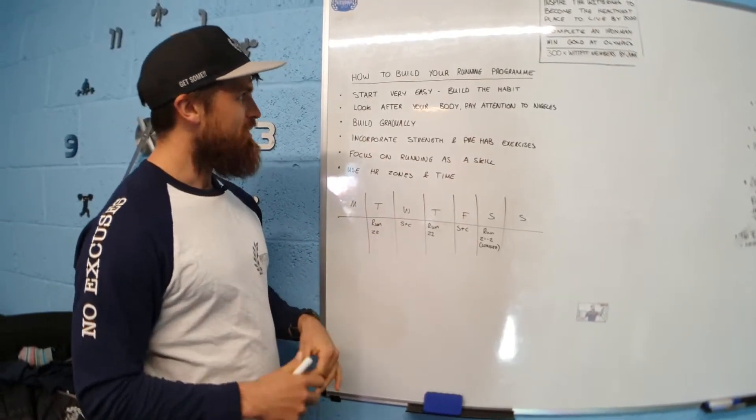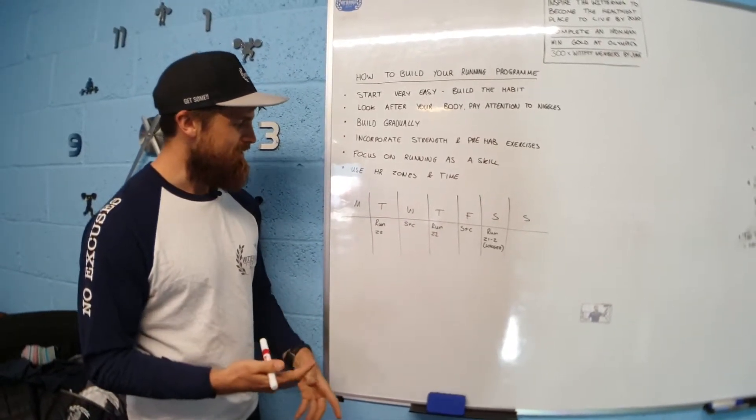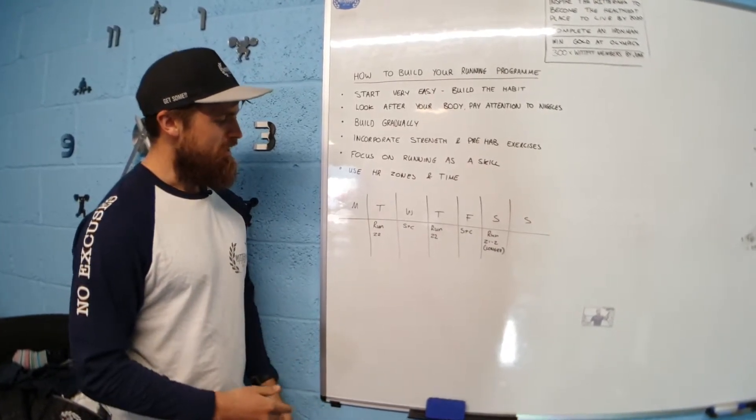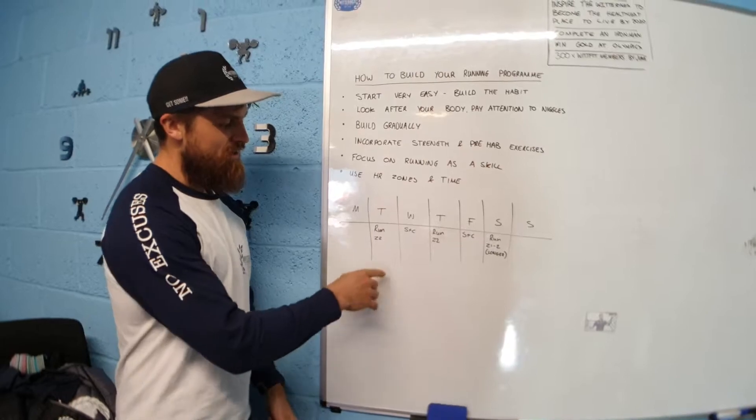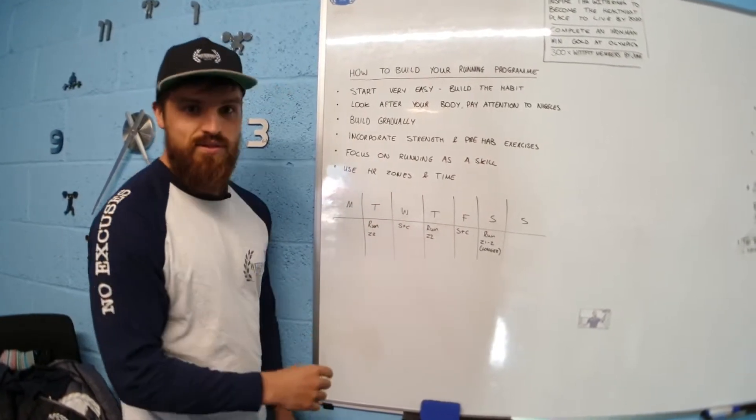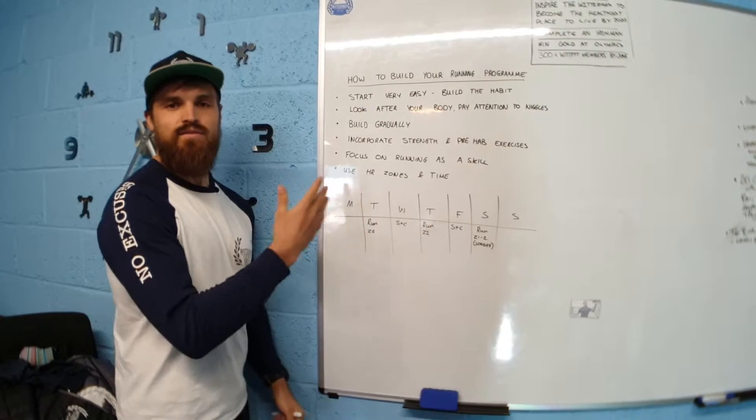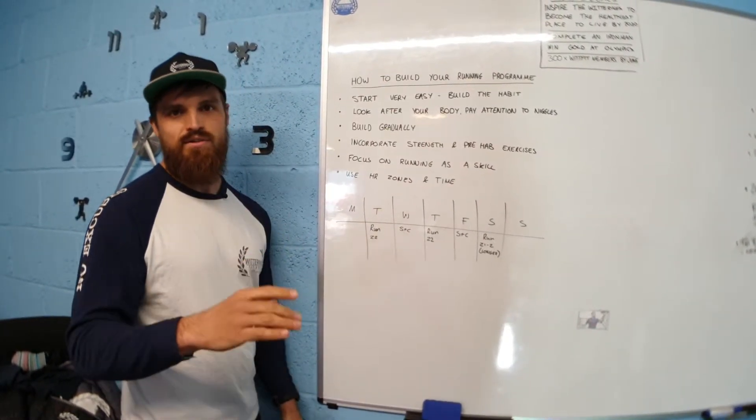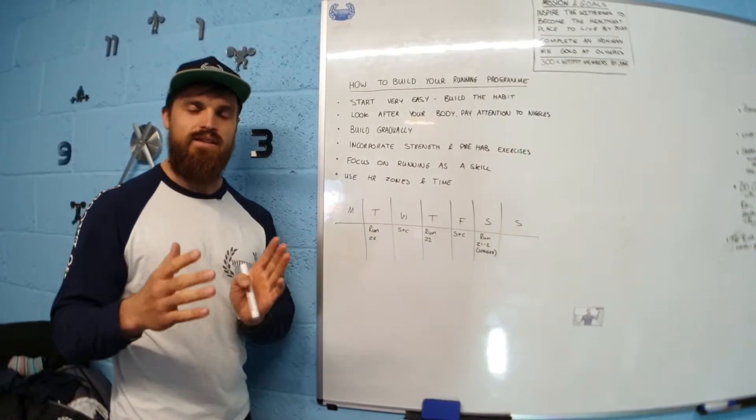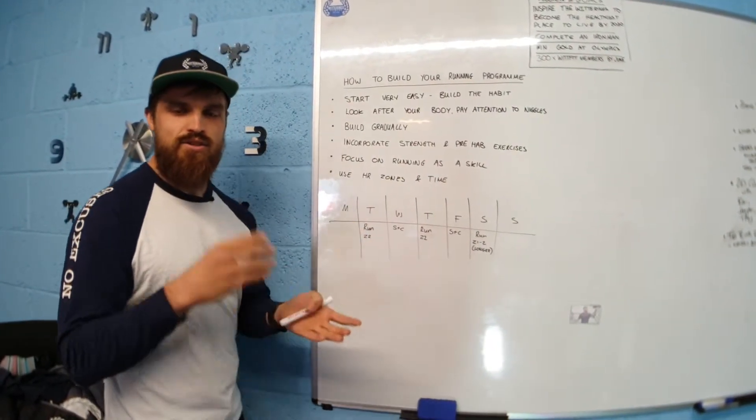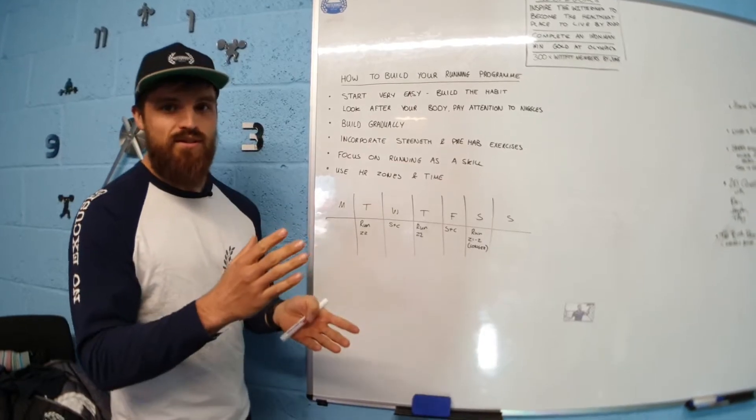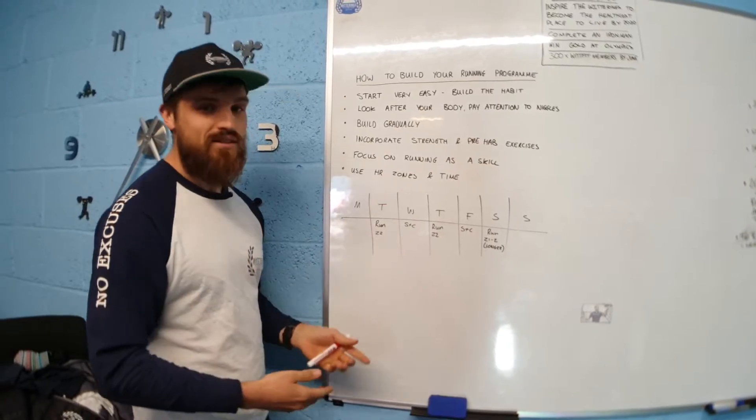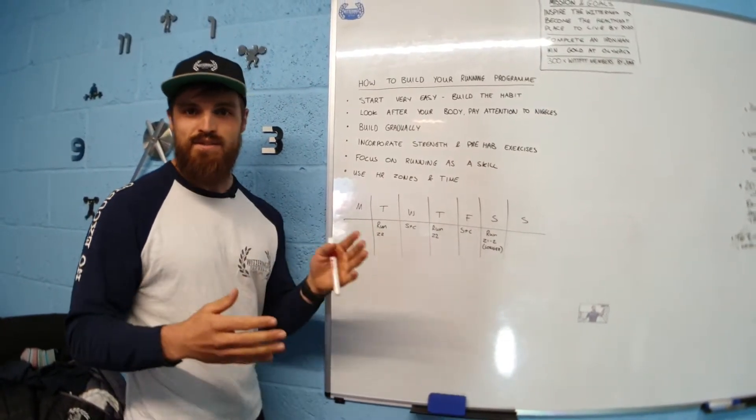So those are the main points for building up your program or points to consider. I take Monday as a rest day, but you don't have to do that. Tuesday can be a run. Now I haven't put times on there but I have put zone two, so it means you're running at zone two. This is for endurance. If you're trying to go into zone three, you're building a slightly different energy pathway. So just stick with zone two, and if you go into zone three, just walk. As long as you're out for however long you're starting with—could be 10 minutes, could be 30 minutes, could be an hour, depends on where you're at the moment.